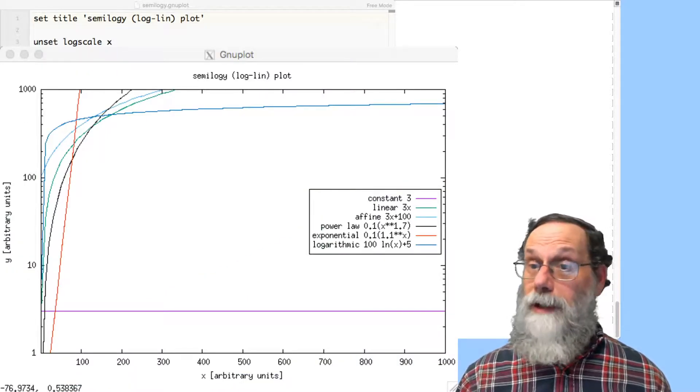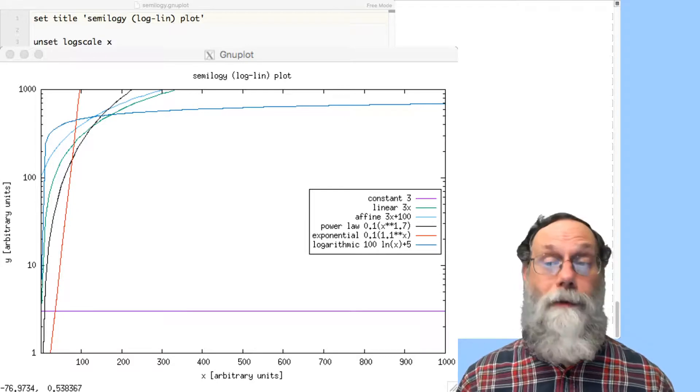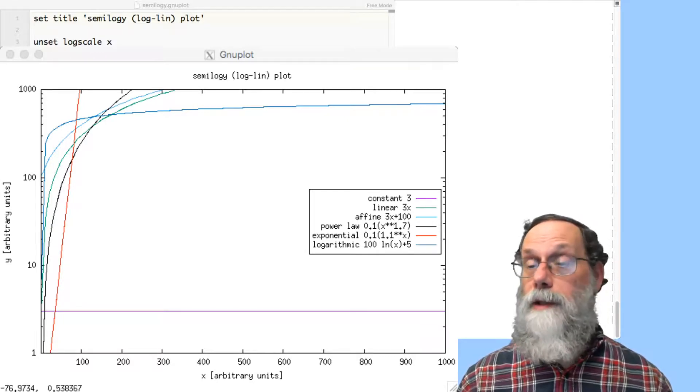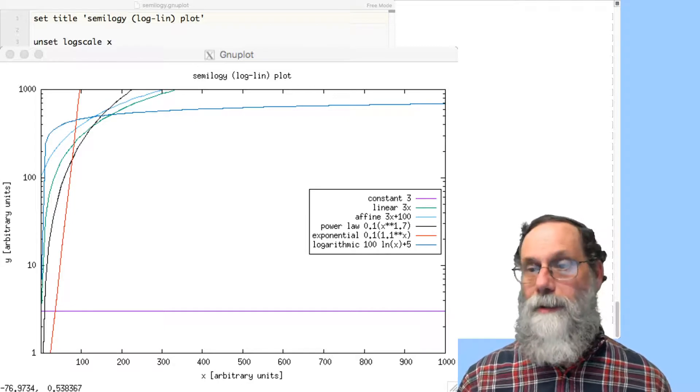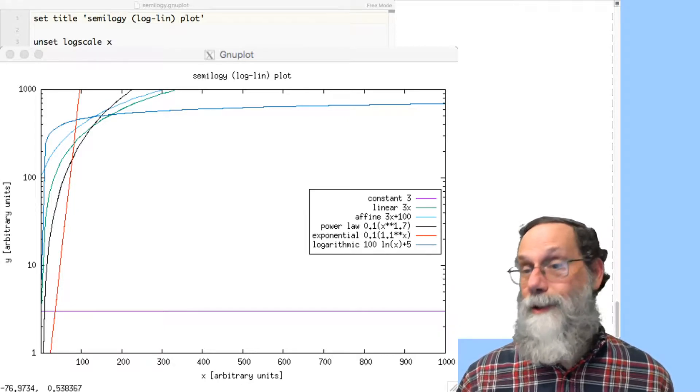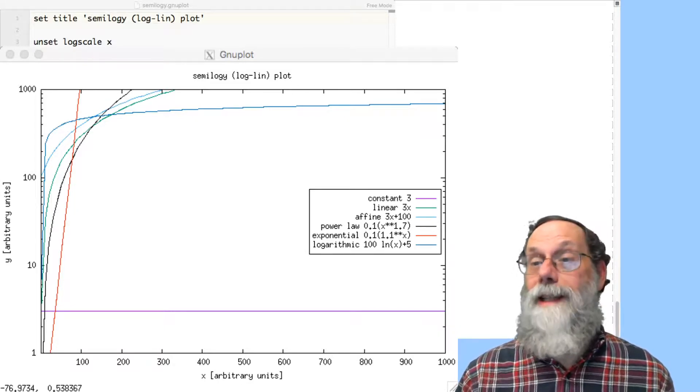And we still have a straight line for constant three. If you've been watching, the constant three has been a straight line throughout. Constants are always straight lines because they never change value. They're always just a horizontal line in whatever your scaling is on your plot.